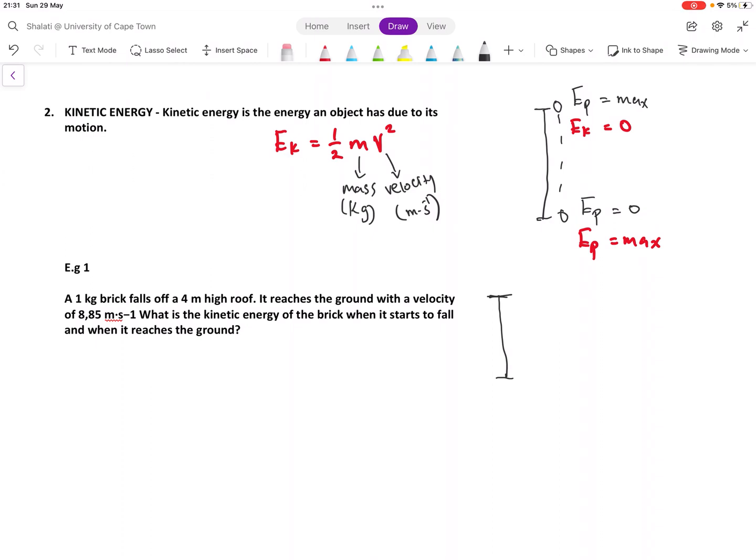To analyze this question, I'm just going to use a small drawing as I always do. So this roof is 4 meters high. Which means at the top, it's 4 meters, at the bottom, it's 0 meters. The brick is 4 meters high, and we're given a velocity of 8.85 meters. What is the kinetic energy of the brick when it starts to fall and when it reaches the ground? Let's see what's given for us.